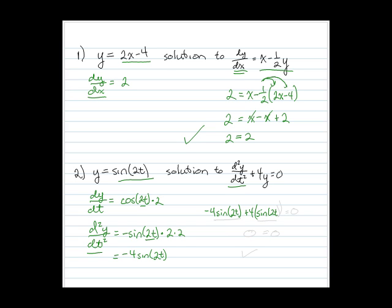equals 0. If we look at the left-hand side, negative 4 sine of 2t plus 4 sine of 2t equals 0, and our solution is verified.